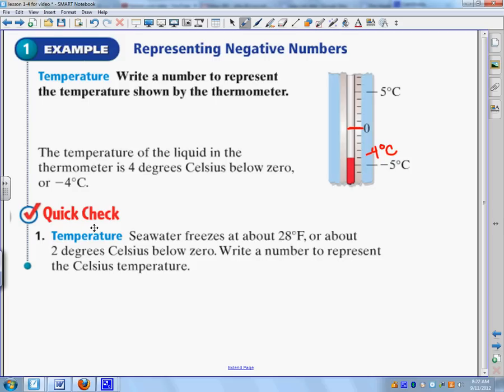Now here's a quick check. This is what I want you to write down as the example in your notes. Seawater freezes at about 28 degrees Fahrenheit, or about 2 degrees Celsius below zero. Write a number to represent the Celsius temperature. So if water freezes at 2 degrees below zero, so it would be negative 2 degrees Celsius.